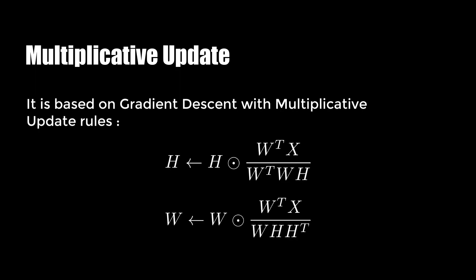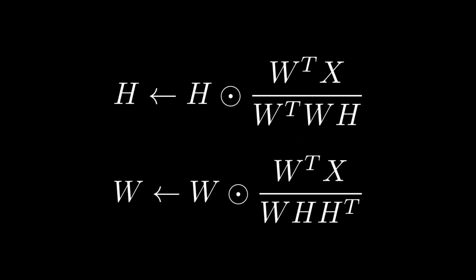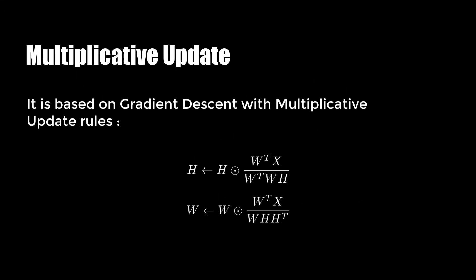So basically in this algorithm, at first we randomly initialize W and H, and in each iteration we fix the W and update H, and then we fix the H and update the W. Lee and Seung proved that under these update rules, gradient descent ensures the convergence of this problem in limited number of iterations.